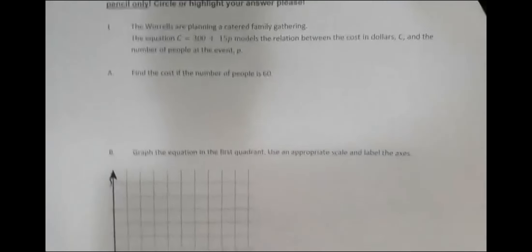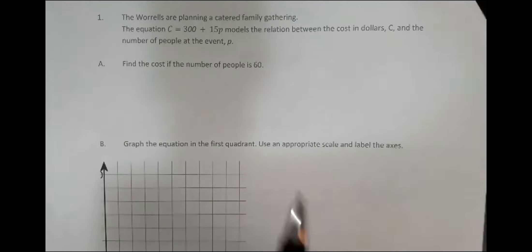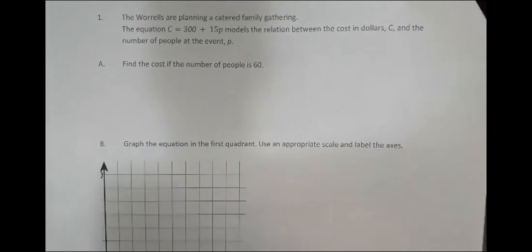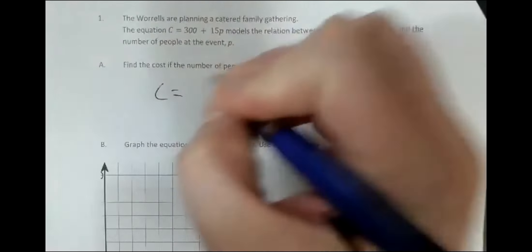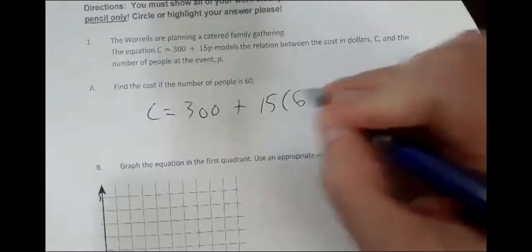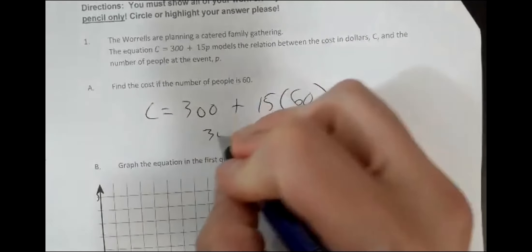Problem one: we have the equation C equals 300 plus 15P. This models the relationship between cost in dollars and number of people P. Find the cost for 60 people. Pretty much everyone got this one correct. 15 times 60 is 900, plus 300 is 1200.